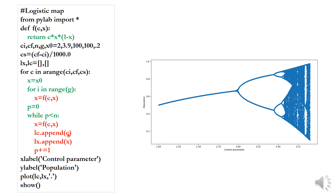When we examine the output for a particular value of c, we get the corresponding attractive points. The number of attractive points found also depends on the number of iterations. As the number of iterations increases, we can resolve finer structure in the attractor.